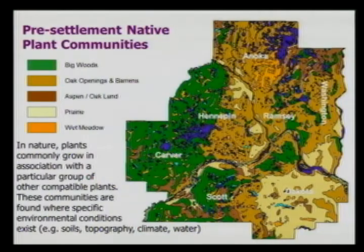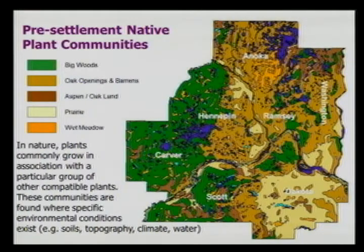Within the metro area, we have a map zooming in closer to the Twin Cities showing the seven-county metro area. We get more detail: the green was the maple basswood forest, the brownish color was oak savannah, and the tan was the prairie region. These are plant communities — hundreds and thousands of species of plants coexisting together because of specific conditions with soils, climate, shade, annual precipitation, and all these little factors that make microclimates.